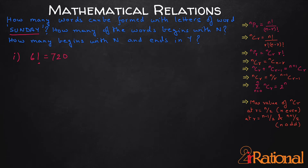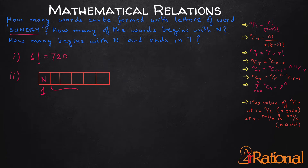For the second sub-question, how many words begin with N? We take our 6 boxes and fix the first letter as N, giving only one option for that position. For the remaining 5 boxes we have 5 options that cannot be repeated, so we can fill them in 5 factorial ways. Total number of ways = 1 × 5 factorial = 120. So 120 of those 720 words start with the letter N.